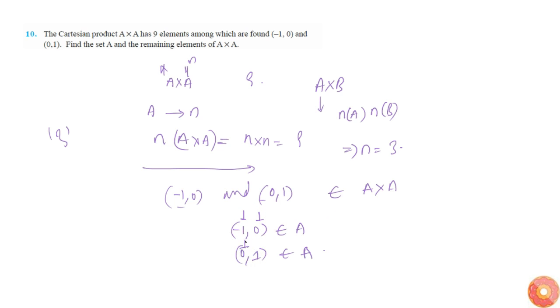Here 1 is again common, so we got another 2, so finally we get minus 1 comma 0 comma 1. This belongs to set A.